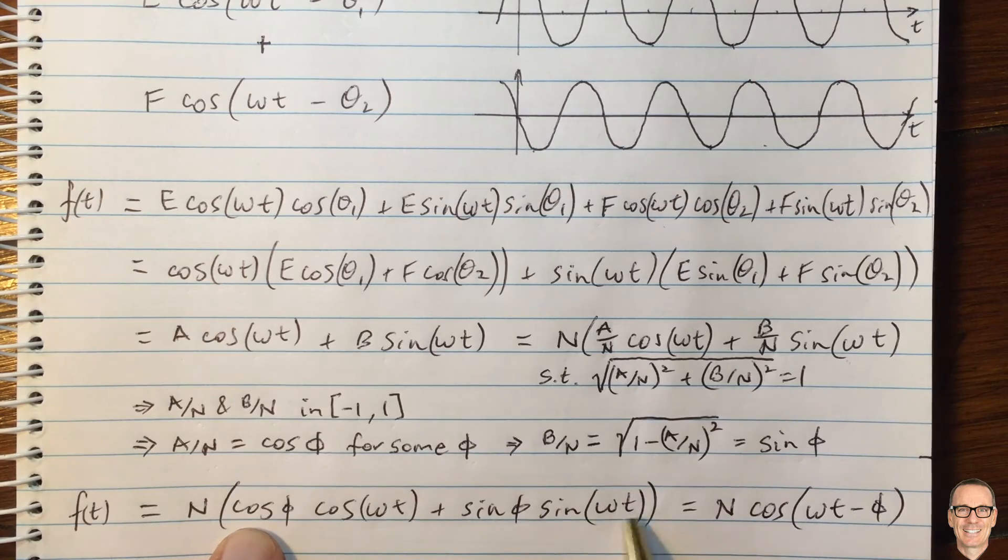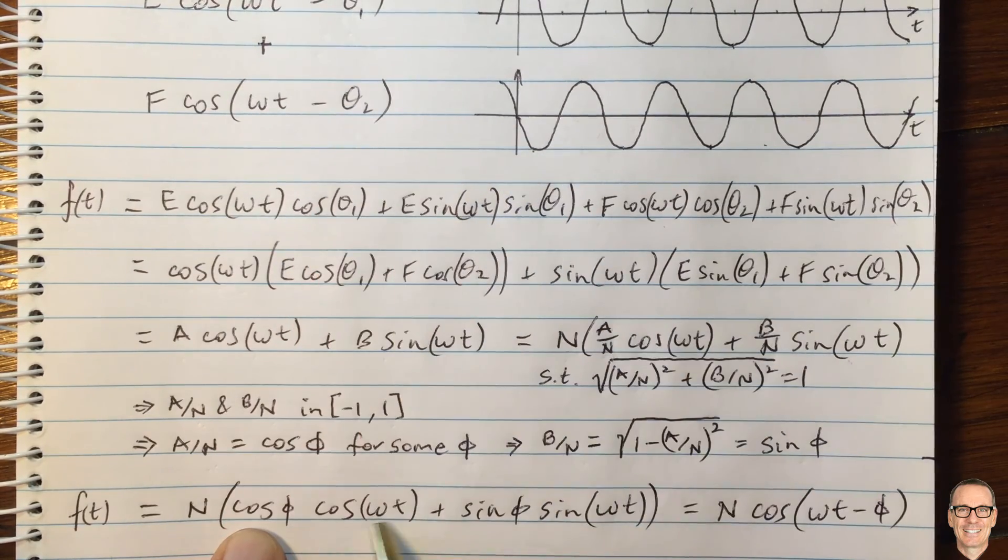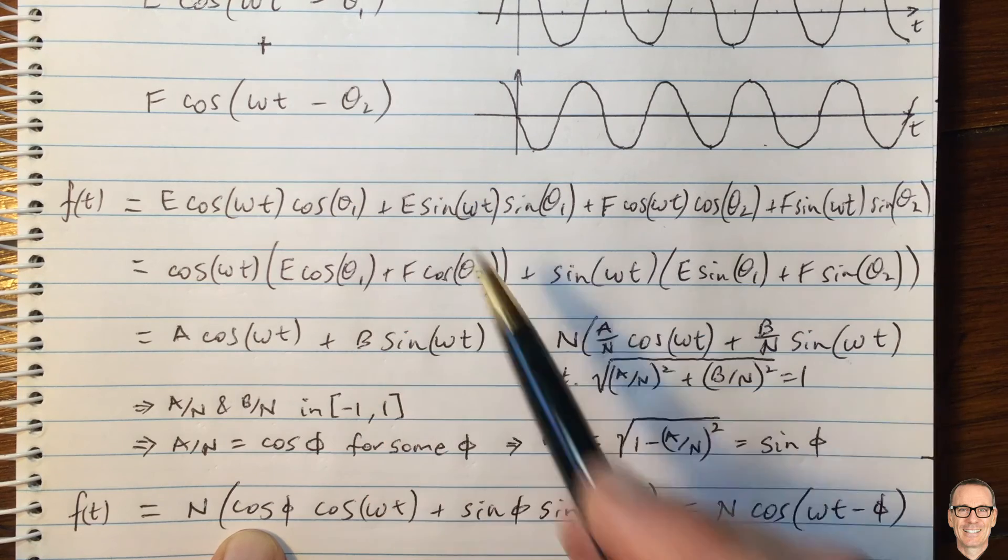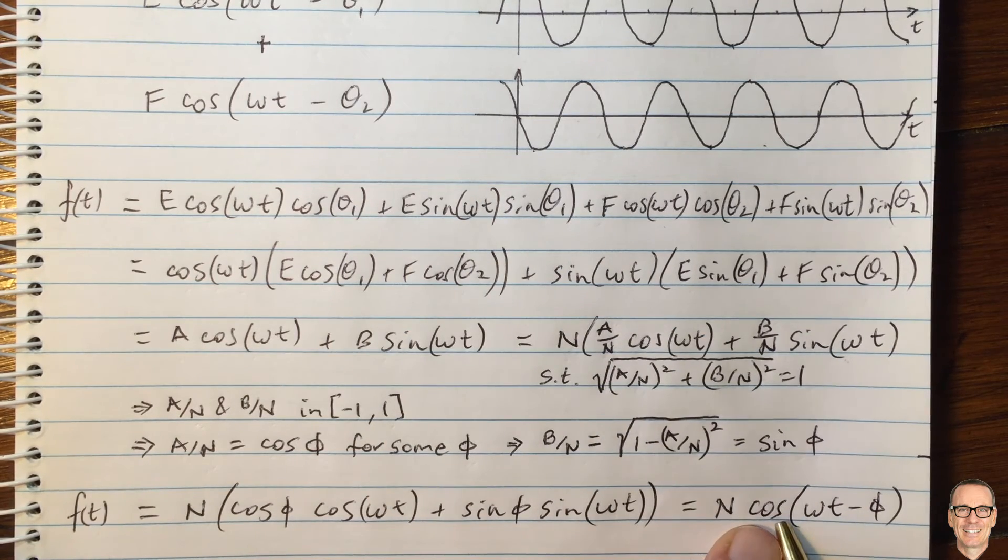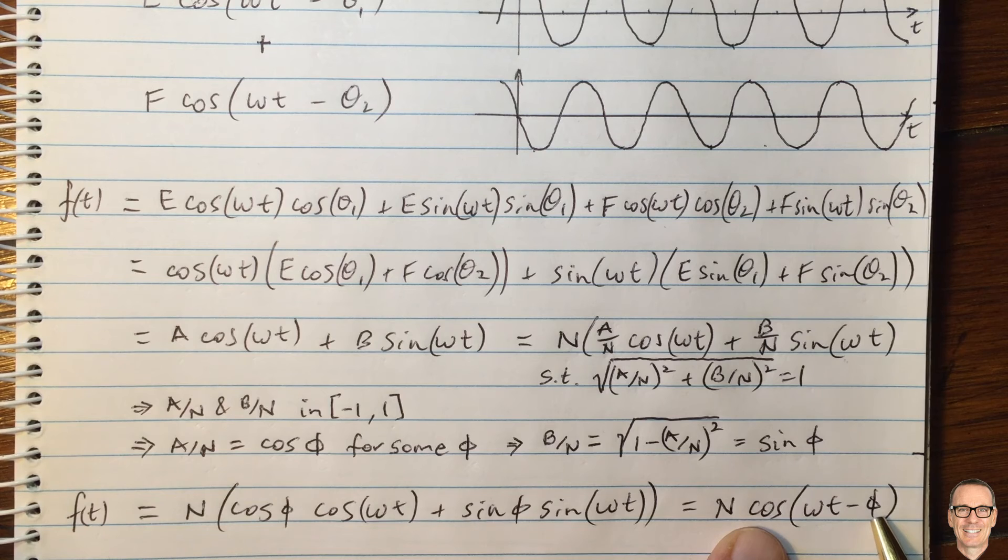Now we have an expression like the one we expanded out to here. So we go in the reverse direction, and the reverse trigonometric expression tells us that we can write that as N cos of omega t minus phi.